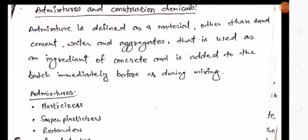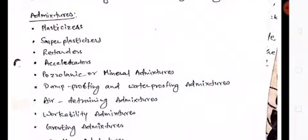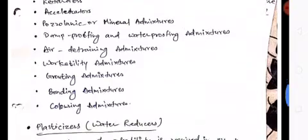Admixture is defined as the material other than sand, cement, and aggregates that is used as an ingredient of concrete and is added to the batch immediately before or during mixing. Admixtures include plasticizers, super plasticizers, retarders, accelerators, pozzolanic or mineral admixtures, damp proofing and waterproofing admixtures, air-entraining admixtures, workability admixtures, grouting admixtures, bonding admixtures, and coloring admixtures.